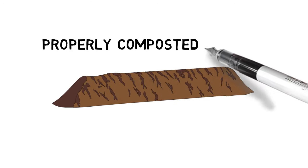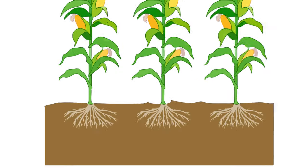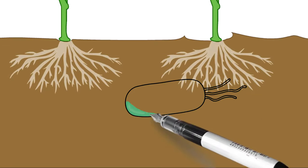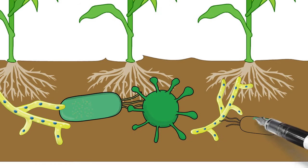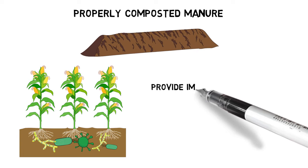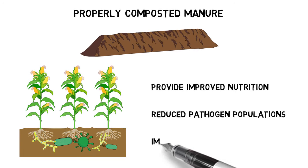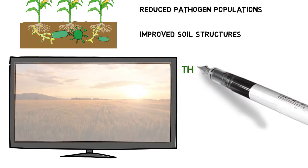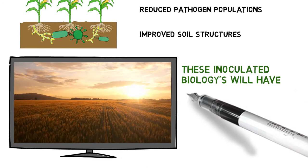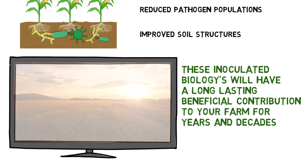By using properly composted manures or materials, you are adding the right biology and mineral structure to your crops, providing improved nutrition, reduced pathogen populations, and improved soil structures. These inoculated biologies will have a long-lasting beneficial contribution to your farm for years and decades.